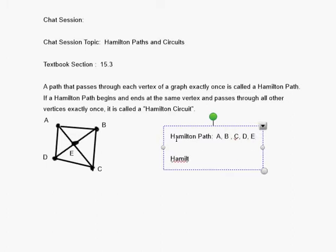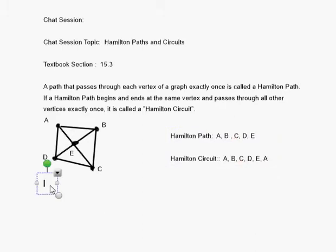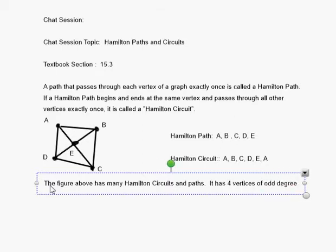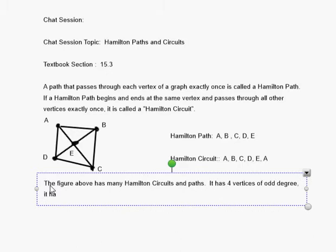And our Hamilton circuit will be A, D, C, D, E, A. The figure above has many Hamilton circuits and paths. It has four vertices of odd degree. It has no Euler paths and no Euler circuits.